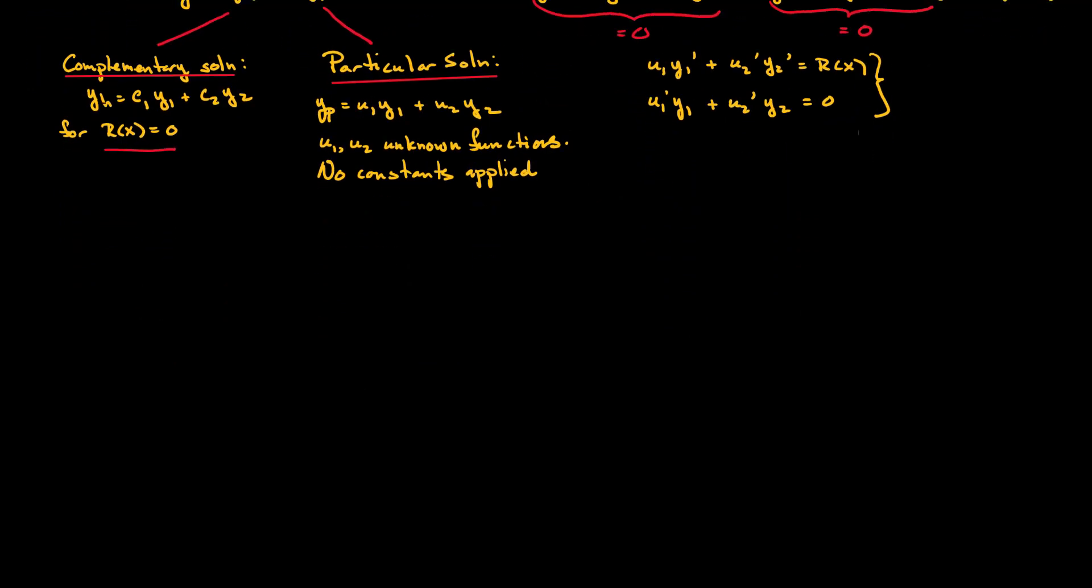Solving this set of equations gives us U1' = -Y2*R(x) / (Y1*Y2' - Y1'*Y2) and U2' = Y1*R(x) / (Y1*Y2' - Y1'*Y2). I would encourage you to check this for yourself as well.